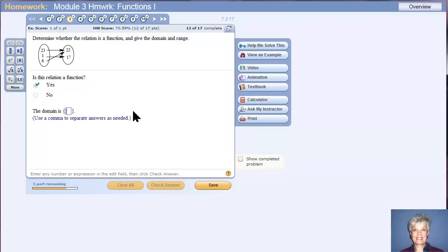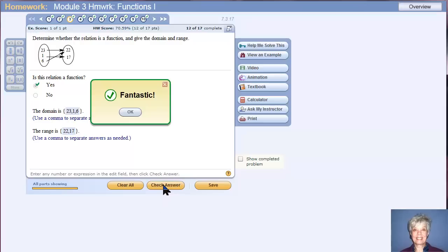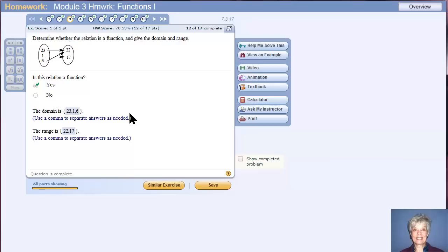The domain is all the numbers on the left. The domain will always be on the left when you have a mapping. 23, 1, 6. Nice work. What's the range? The numbers 22 and 17. Check answer. Fantastic. Got it right. Let's go on to number 4.